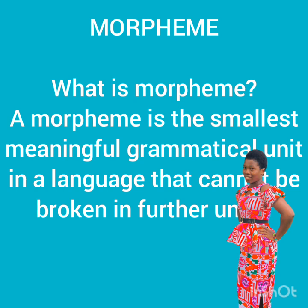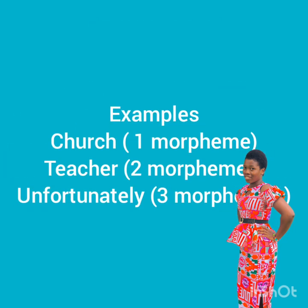A morpheme is the smallest meaningful grammatical unit in a language that cannot be broken into further units. It is the smallest meaningful grammatical unit in a language that cannot be broken into further units. We will get to know why it cannot be broken into further units. Let's take the example: 'church.'